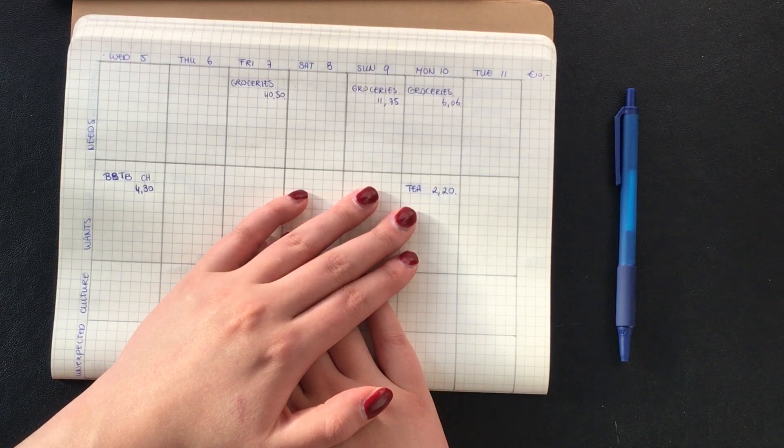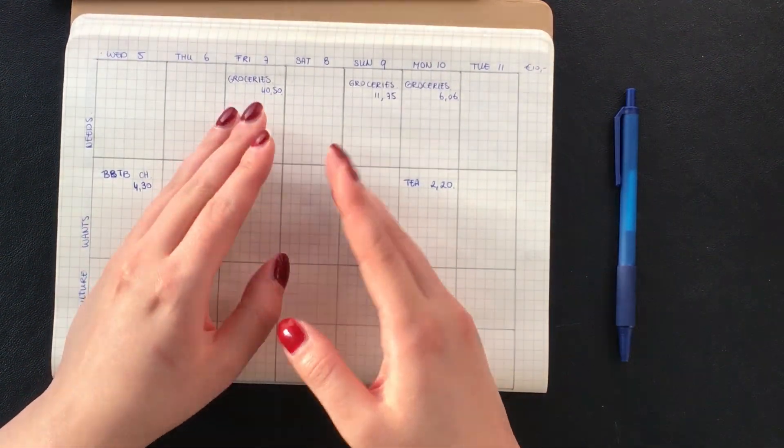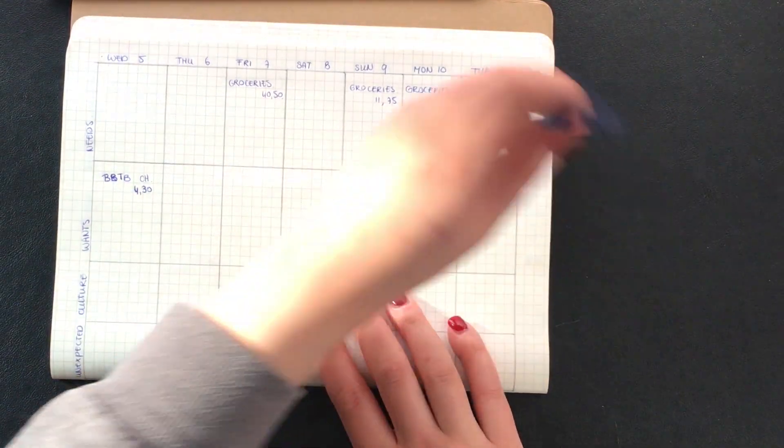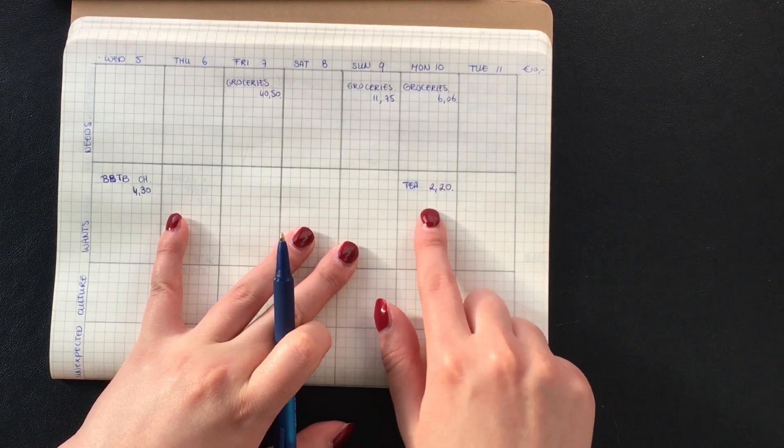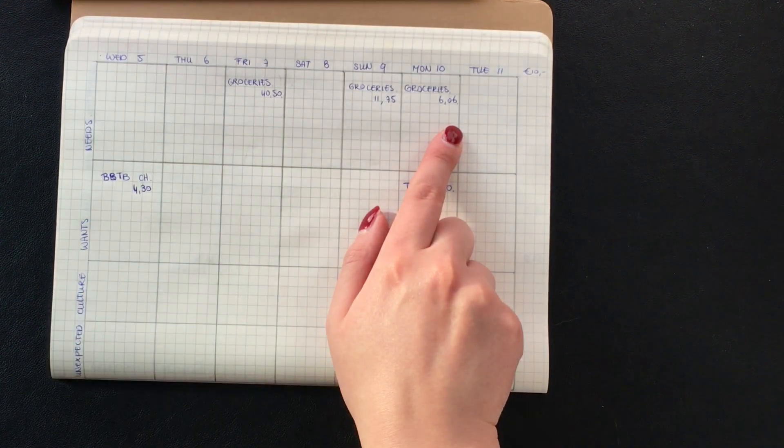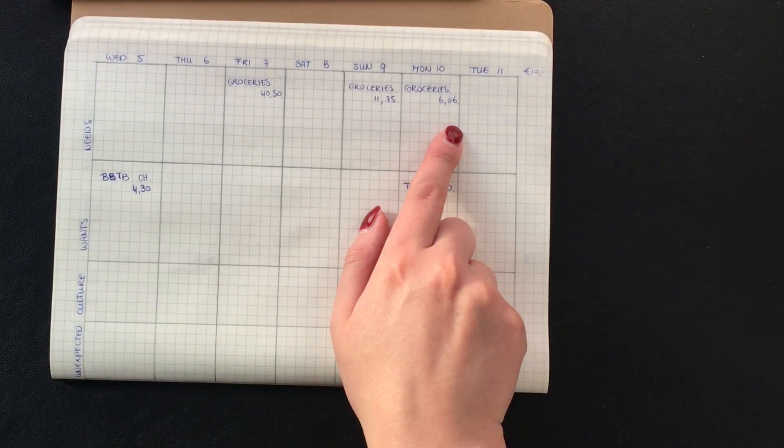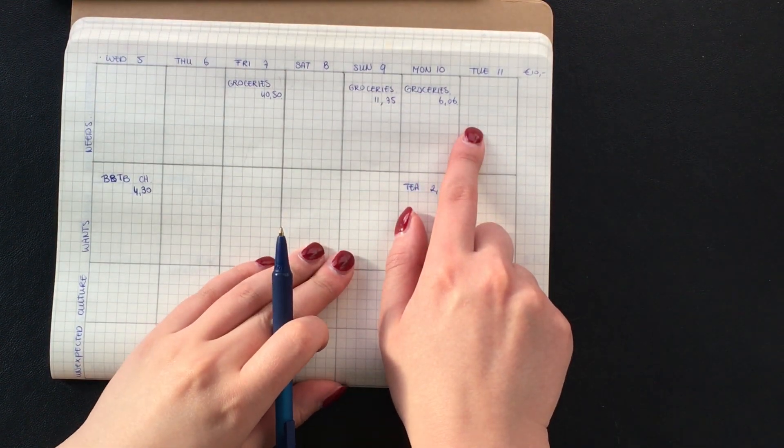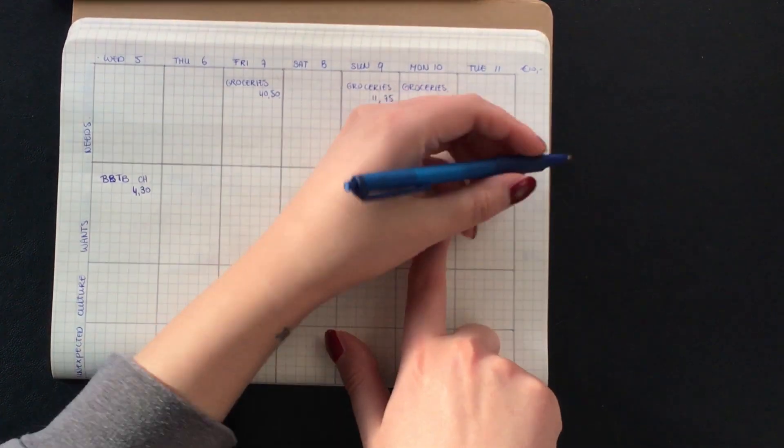I am happy that I've caught that. That means that for all my spending for the week I am still under my 10 euro budget. I'm still under my 10 euro budget because this will be 6.50 in total.